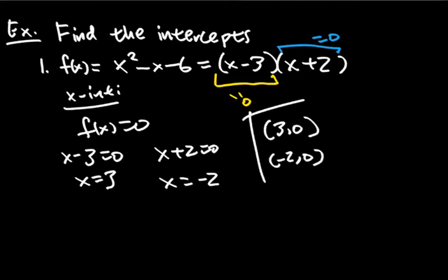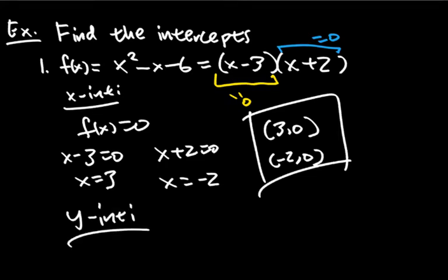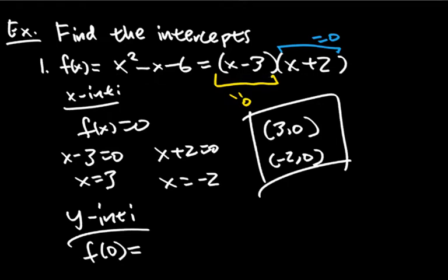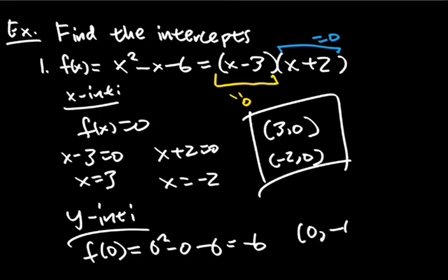For the y-intercept, we evaluate f(0) — substitute x = 0. You can use either form since they're equivalent, but it's easiest to plug into the non-factored form: everything with x becomes zero, and we're just left with negative six. So zero comma negative six is our y-intercept.